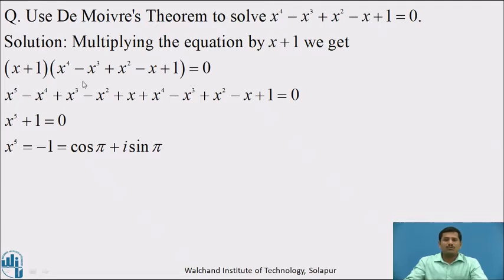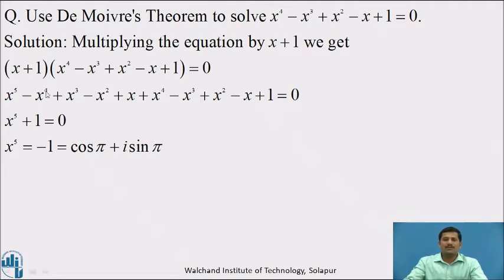Multiplying x to all terms of the second bracket, we get x into x to the power 4 is x to the power 5, x into minus x cubed is minus x to the power 4, x into x squared is plus x cubed, x into minus x is minus x squared, and x into plus 1 is plus x. Multiplying by 1 to the next bracket gives x to the power 4 minus x cubed plus x squared minus x plus 1 equal to 0. After cancelling like terms, this polynomial reduces to x to the power 5 plus 1 equal to 0.